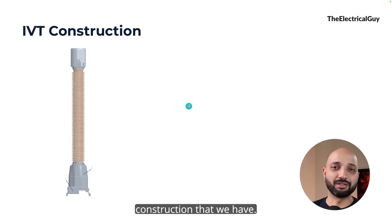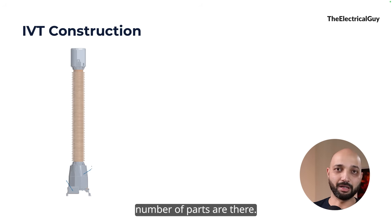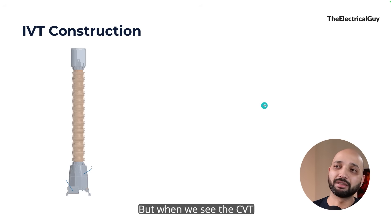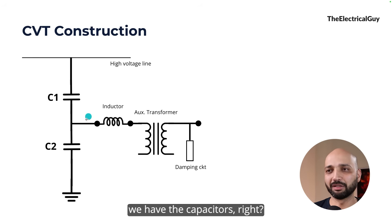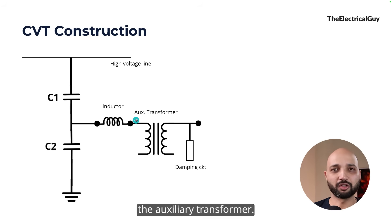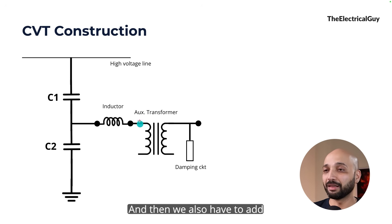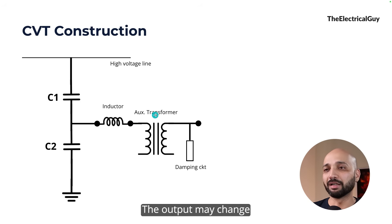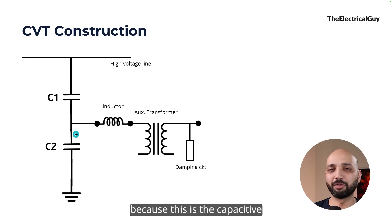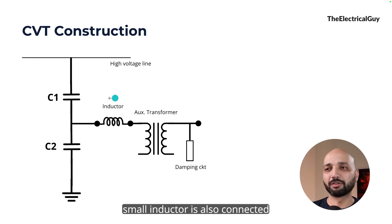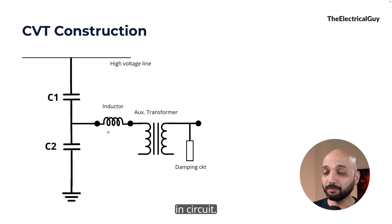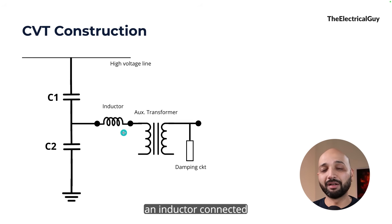The IVT has a very simple construction with a limited number of parts, and everything is insulated using oil. But when we look at the CVT construction, it has a lot of parts. First, we have the capacitors, then the auxiliary transformer, and we also have to add an inductor in series. This inductor is needed because the capacitive element can cause phase displacement when the load is resistive, such as meters, so a small inductor is added to balance that out.